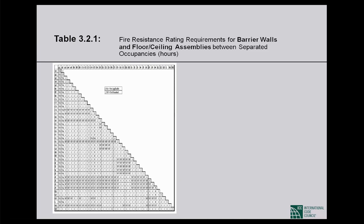The separation distance for detached occupancies is determined on two criteria: the difference of occupancies and the difference in height. For tall buildings there are separate separation rules. If two buildings side by side within the same plot are of different occupancies, we can imagine a line between them — the fire separation distance D1 applies to occupancy one and D2 applies to occupancy two, giving a combined separation distance of D1 plus D2. For buildings of different heights, the separation distance is also determined by height.